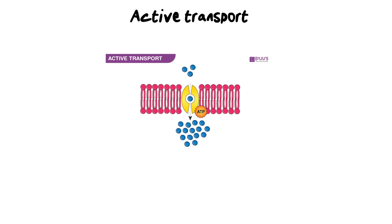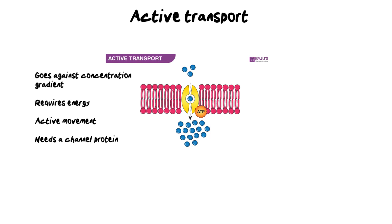The final mechanism is active transport, which is really unique. Firstly, it goes against the concentration gradient — it moves from a low concentration to a high concentration. In the diagram, you can see only a few molecules on the outside of the cell, which is the low side, while on the inside there is a high concentration. Moving from low to high is what we mean by going against the concentration gradient.